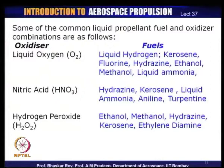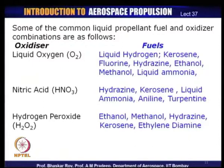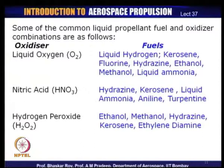Let us look at some common liquid propellant fuel and oxidizer combinations. For oxidizers we have liquid oxygen, nitric acid, and hydrogen peroxide. Each of these oxidizers can use various fuels: liquid hydrogen, kerosene, fluorine, hydrazine, ethanol, methanol, and liquid ammonia. Some fuels are a little toxic and require care. Kerosene is a well-known hydrocarbon used quite a lot, but increasingly bigger rocket engines are using liquid hydrogen and liquid oxygen as primary fuel and oxidizer.